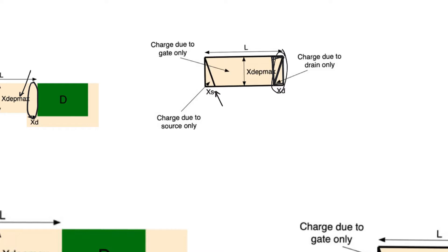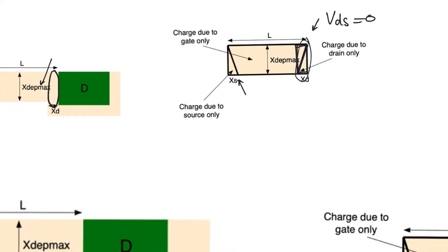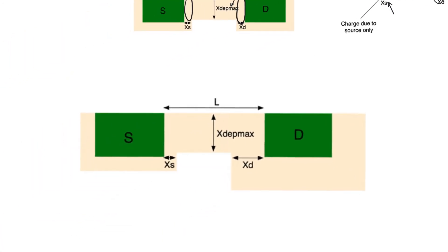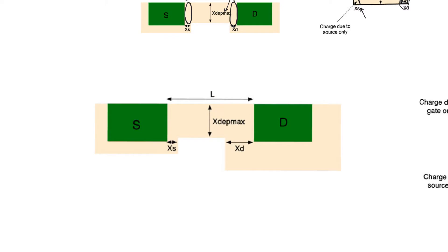The trapezium represents charge controlled entirely by the gate, and the two triangles represent charges controlled entirely by either the drain or the source. The situation drawn here is for V_DS equals zero, meaning the drain potential equals the source potential. Drain-induced barrier lowering is a concern when drain potential is high, so let's see how this looks when V_DS is greater than zero.